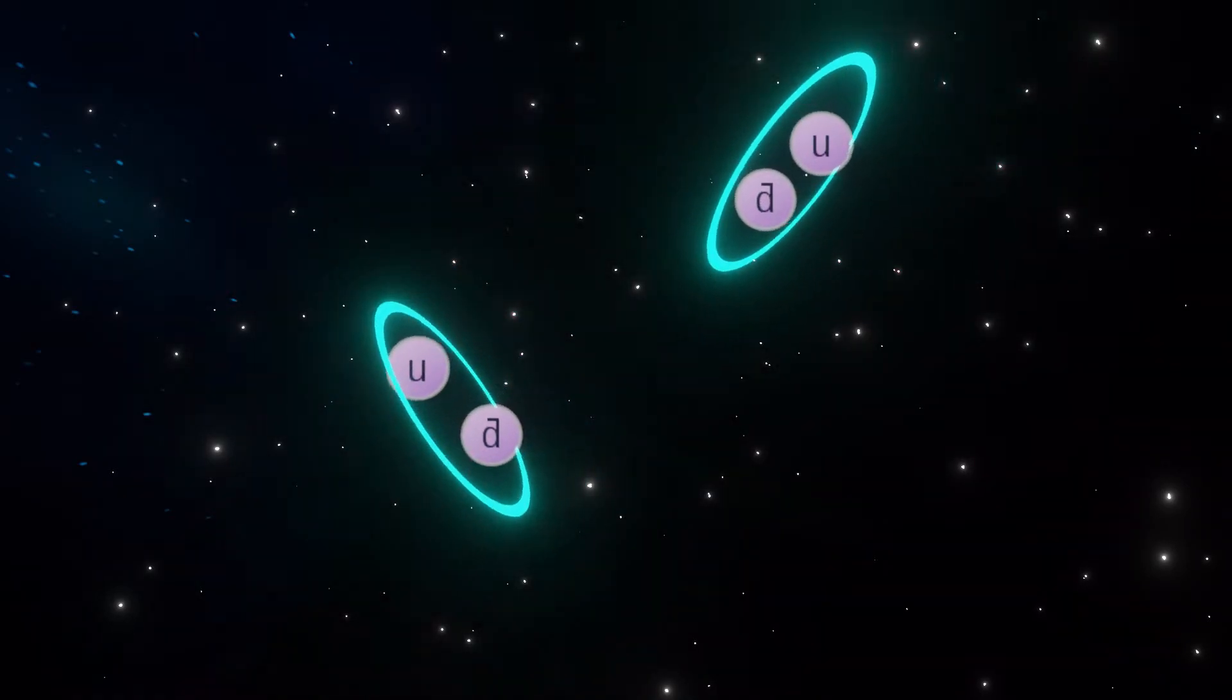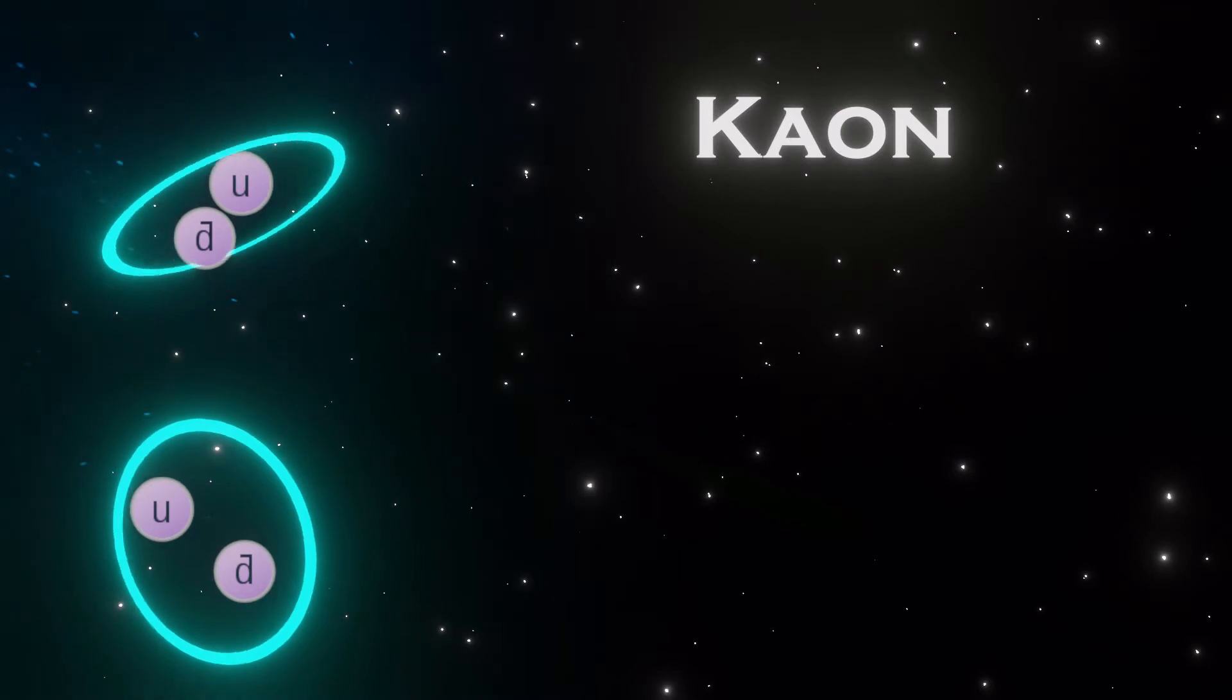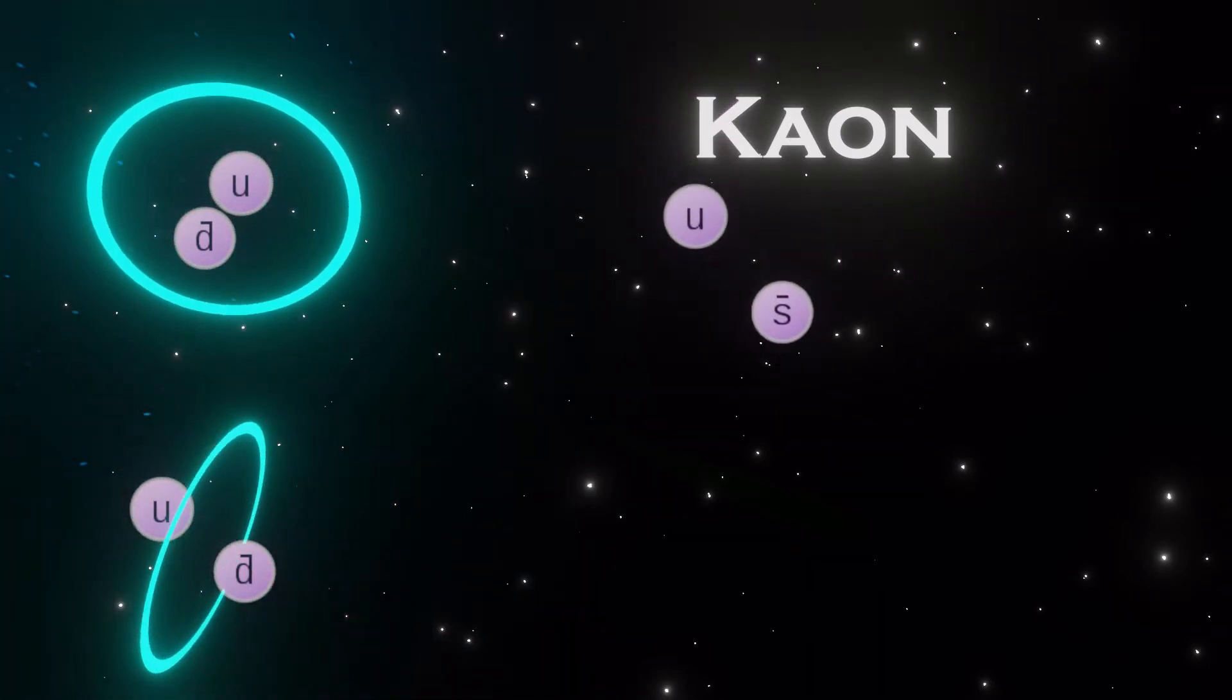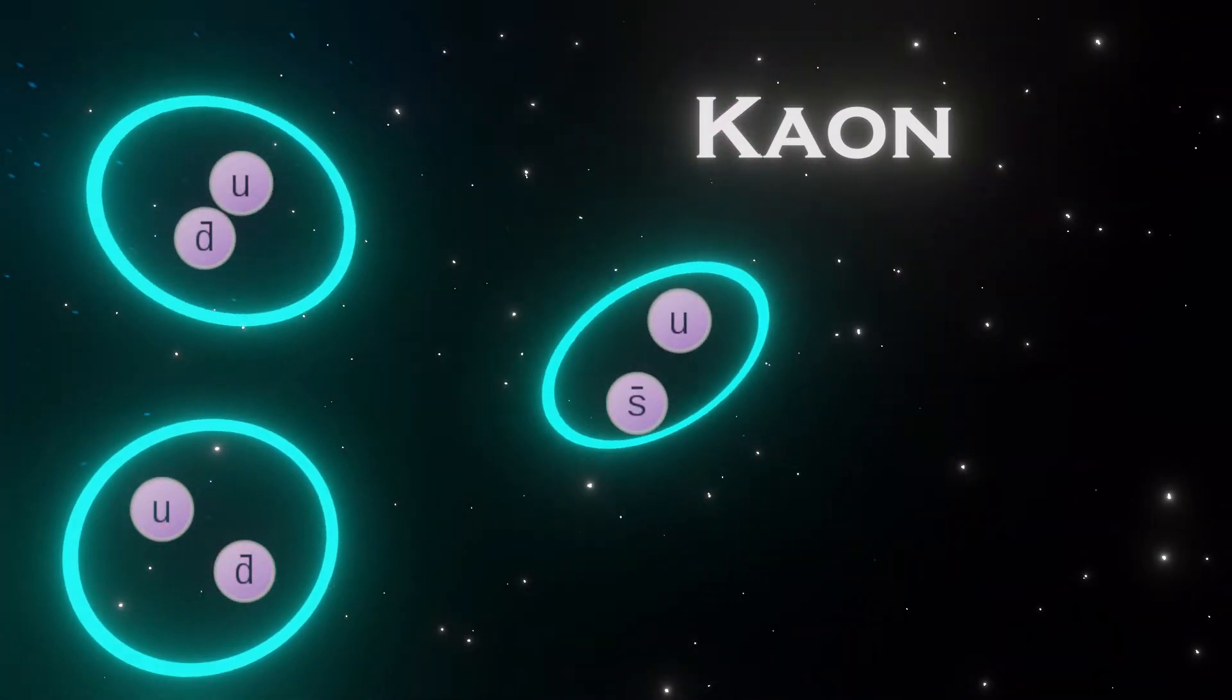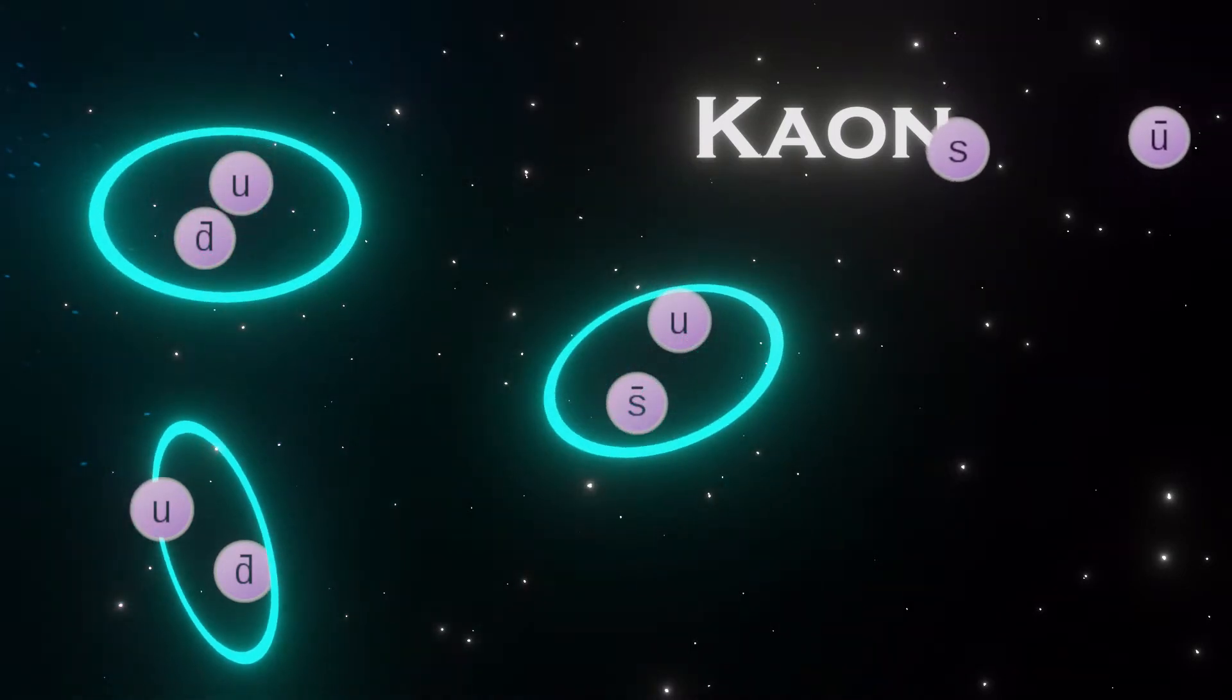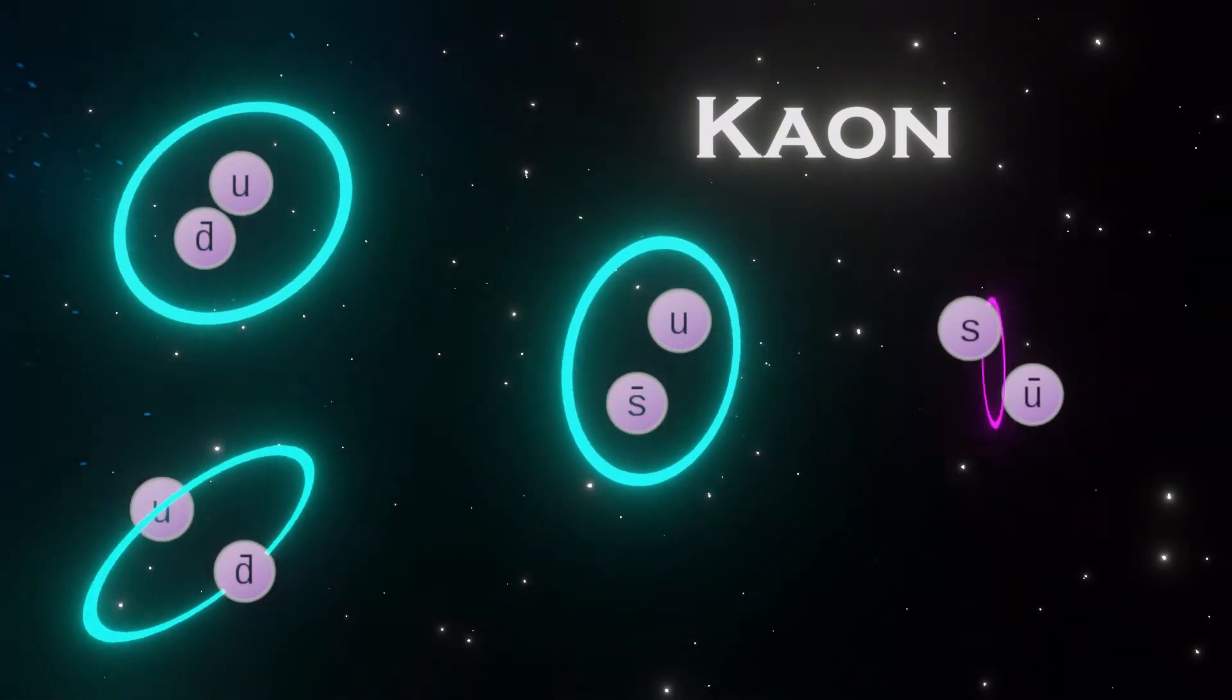A more specific example could be the kaon, also known as the K-meson, which is formed by an up quark with an anti-strange quark or its antimatter equivalent, an anti-up quark with a strange quark.